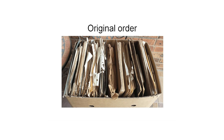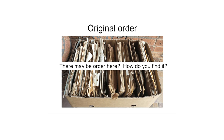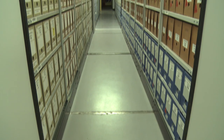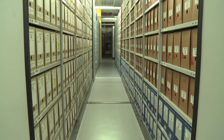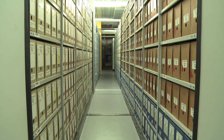Here is an example of some records that might be offered to you for your collection. There may be order here — how do you find it? You need to examine the records. Look for information that helps you identify what the records are and the order of those records.